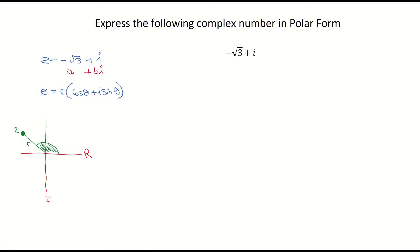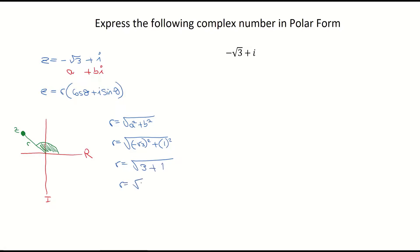To find R, we use the modulus formula: square root of a squared plus b squared. So R equals the square root of (negative root 3) squared plus 1 squared — put that in brackets on your calculator to make sure it squares the negative. That gives R equals the square root of 3 plus 1, which is the square root of 4, which is 2. So the modulus of this complex number is 2.